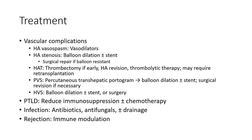Treatment for vascular complications: hepatic vein stenosis — balloon dilation and stent placement; HAT — thrombectomy, hepatic artery revision, thrombolytic therapy, or retransplantation. Portal vein stenosis — percutaneous transhepatic portogram, balloon dilation plus or minus stent, or surgical revision if necessary. Hepatic vein stenosis — balloon dilation plus or minus stent or surgery. PTLD — reduced immunosuppression plus or minus chemotherapy. Infection — antibiotics or antifungals. Rejection — immune modulation.